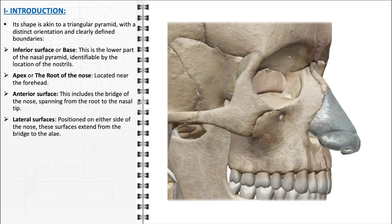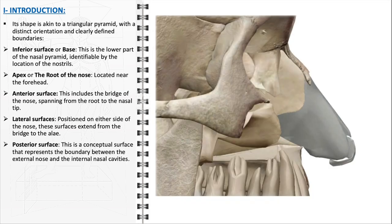The lateral surfaces, found on either side of the nose, span from the bridge to the alae, contributing to the width and overall contour of the nose. The posterior surface, although conceptual, represents an important boundary between the external nose and the internal nasal cavities, delineating the transition to the internal pathways essential for respiration and olfaction. Each of these surfaces works together to protect the nasal cavities, support the respiratory system, and define the appearance of the human face.